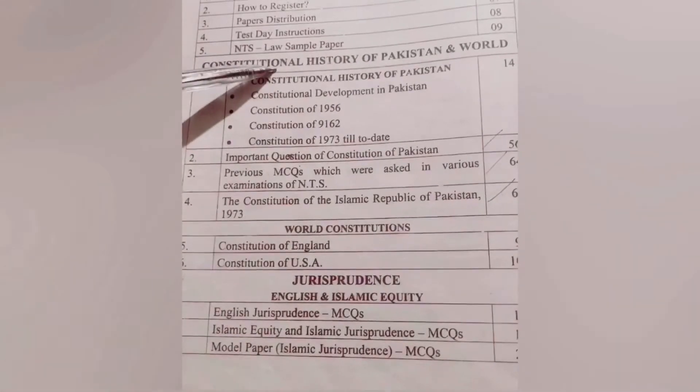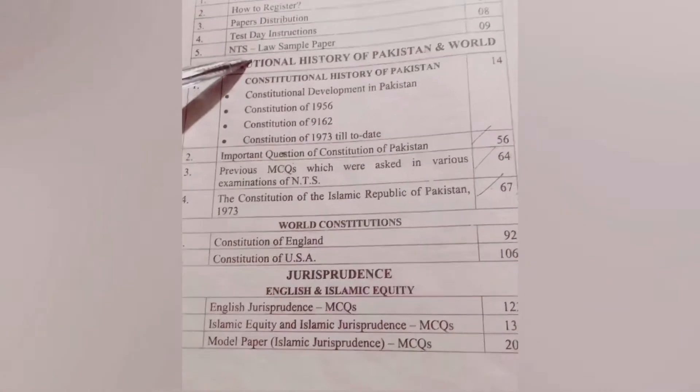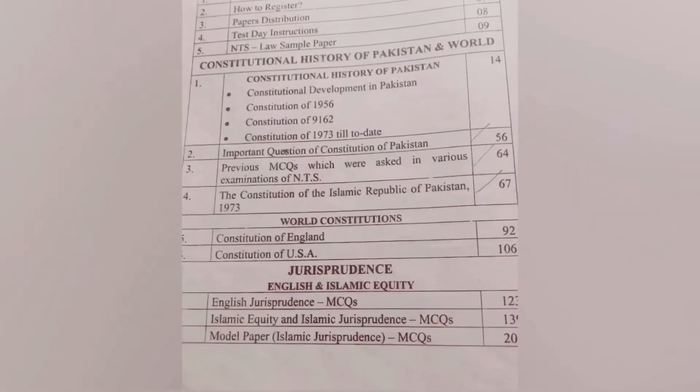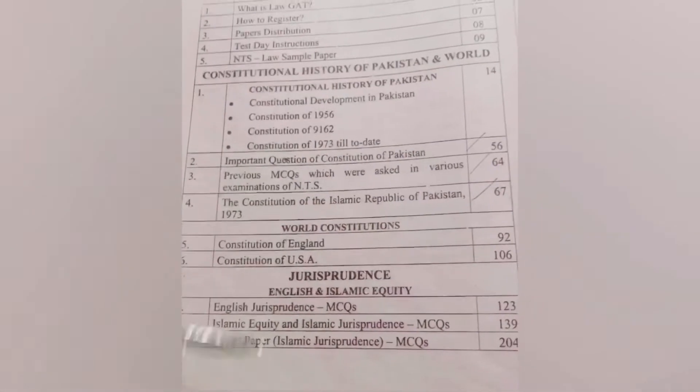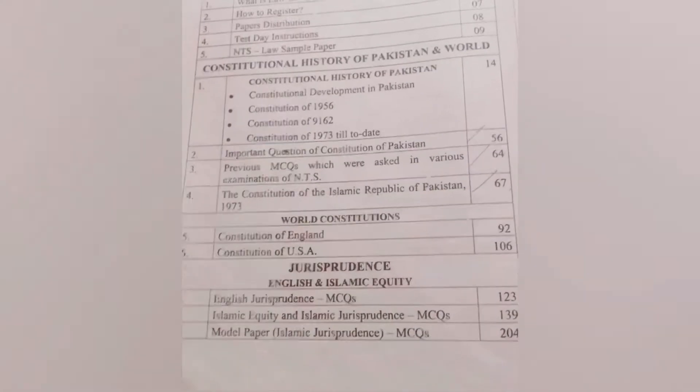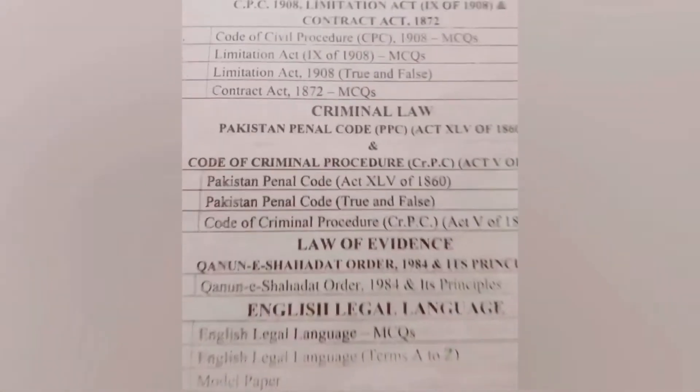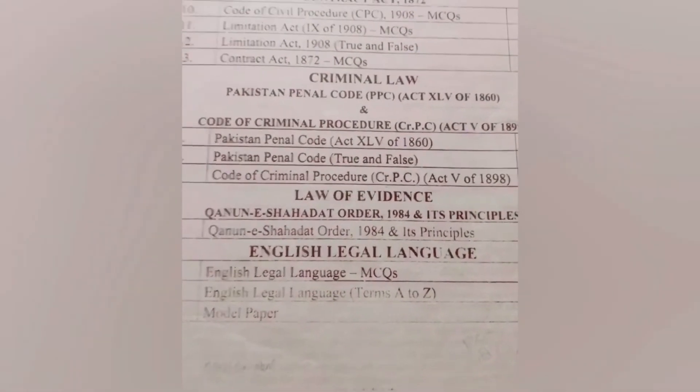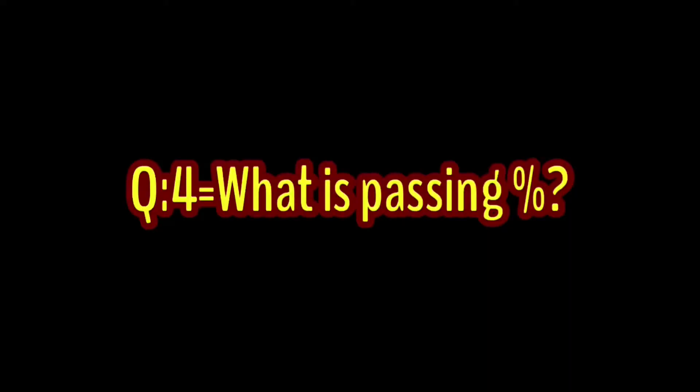Our third question is: from which subjects will LAW GAT be taken? The subjects are: first, constitutional history of Pakistan and the world — meaning we will learn about Pakistani constitutions from the beginning, including the Constitution of 1973. Then English and Islamic jurisprudence. Then civil law, which consists of the Code of Civil Procedure 1908, Limitation Act 1908, Contract Act 1872, and the Code of Criminal Procedure. Criminal law consists of the Pakistan Penal Code 1860 and Code of Criminal Procedure. Then Qanun-e-Shahadat and legal language.